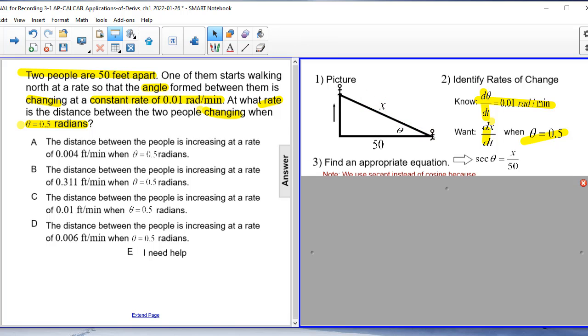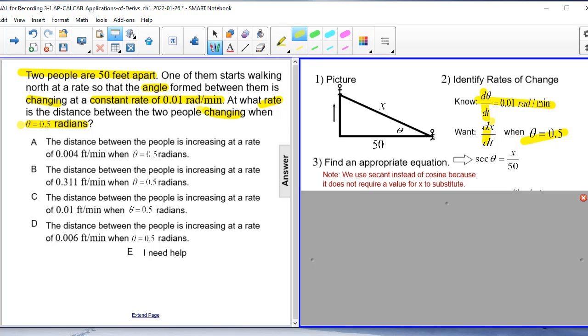Now the next part is that we do want to come up with an equation. We have six different trig functions we can use. I'm going to suggest using secant. Remember that secant is equal to hypotenuse over adjacent. So the hypotenuse is x, the adjacent leg is equal to 50, so the secant of theta is x over 50.